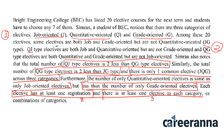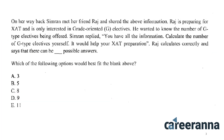Before starting with the questions, you should make a Venn diagram so you understand how to approach this. Now for question one: Simran met her friend Raj who is preparing for CAT and is only interested in grade oriented electives. He wants to know the number of G type electives being offered. Simran says to calculate it yourself. Raj calculates correctly and says there can be how many possible answers? Options are 3, 5, 8, 9, and 11.